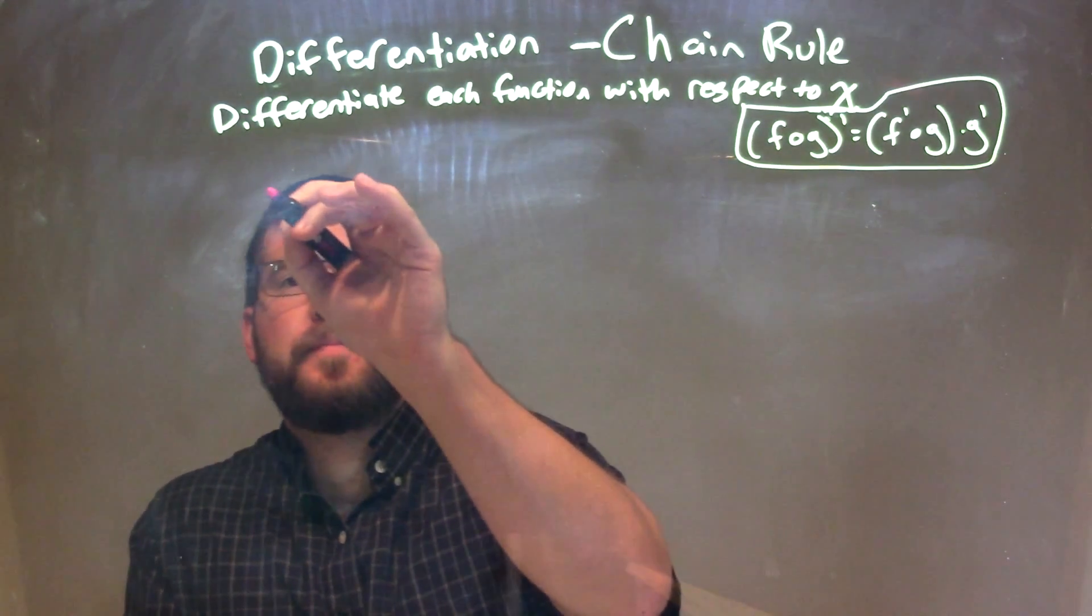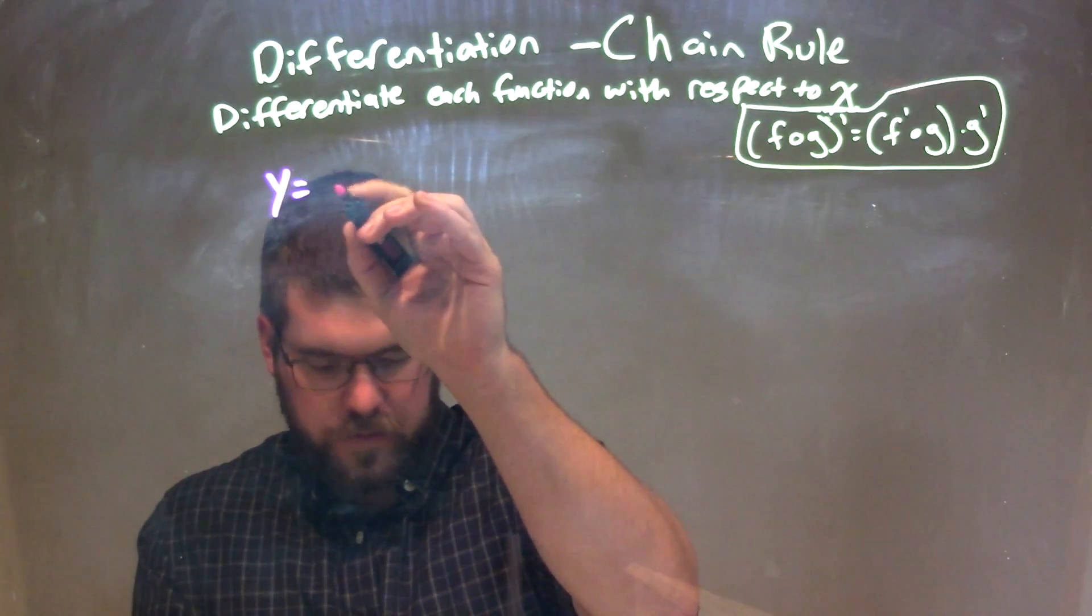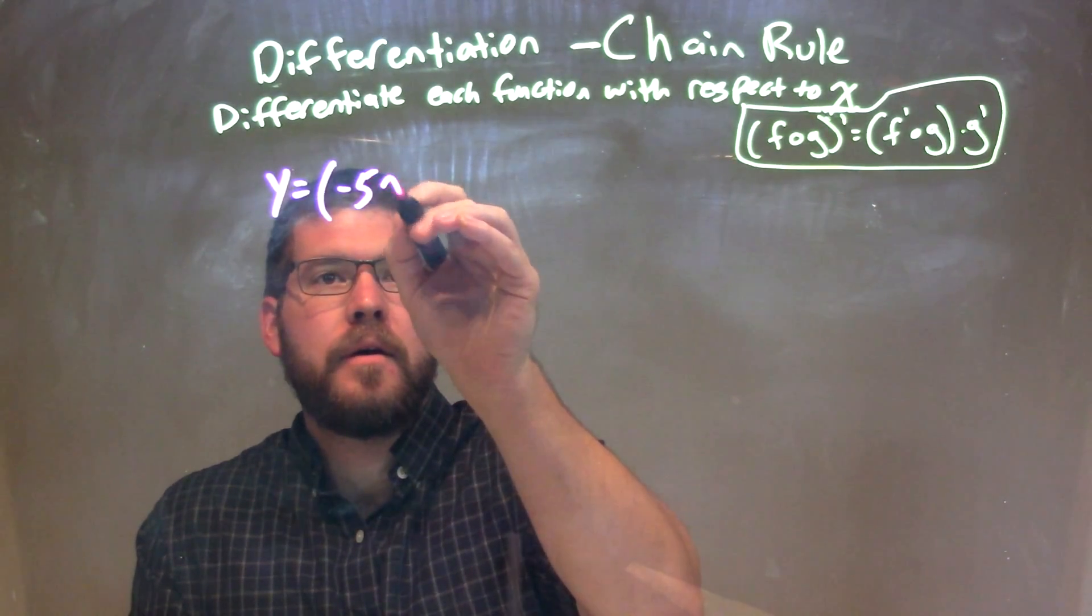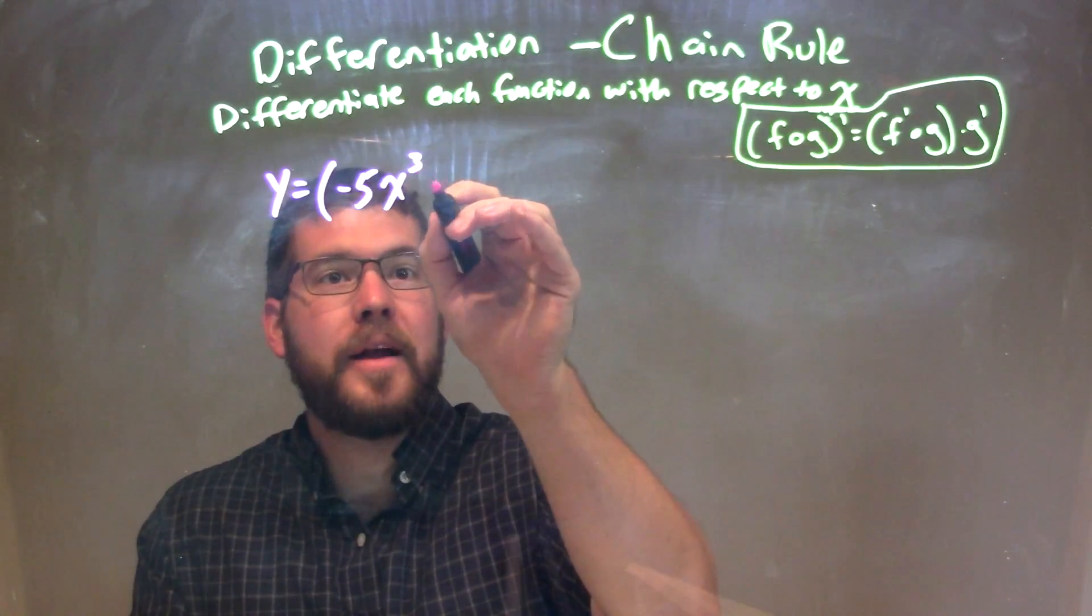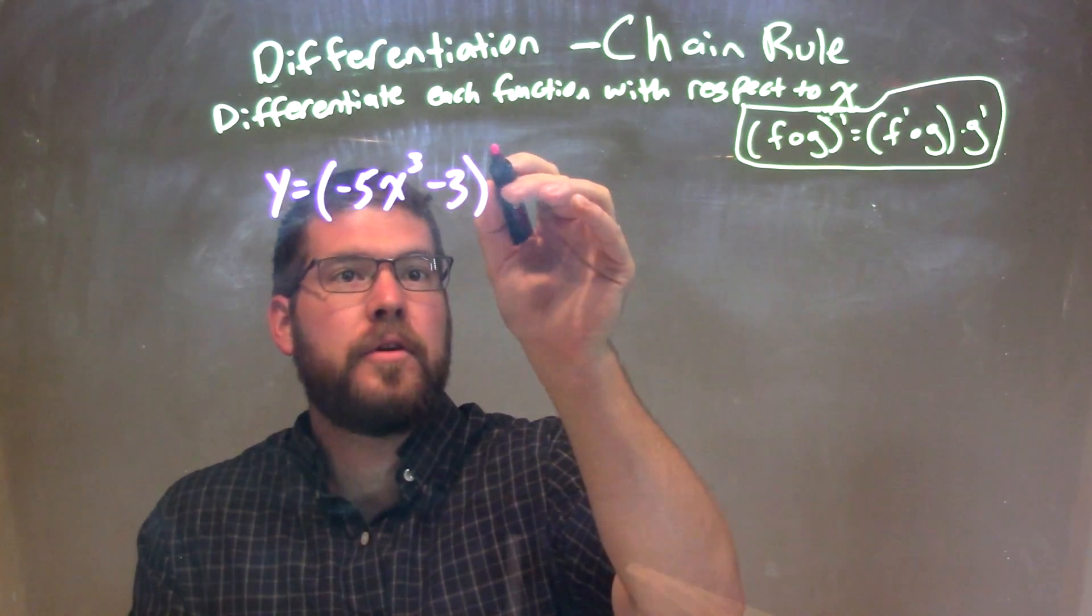So if I was given this function: y equals (negative 5x to the third minus 3) all to the third power.